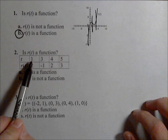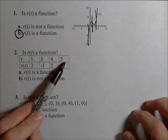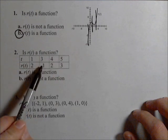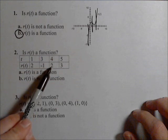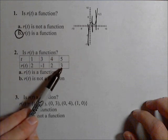So if we look at our input of one, it only has an output of two; there's no other ones in here. Three only has an output of negative one, four only has an output of two, five only has an output of three.